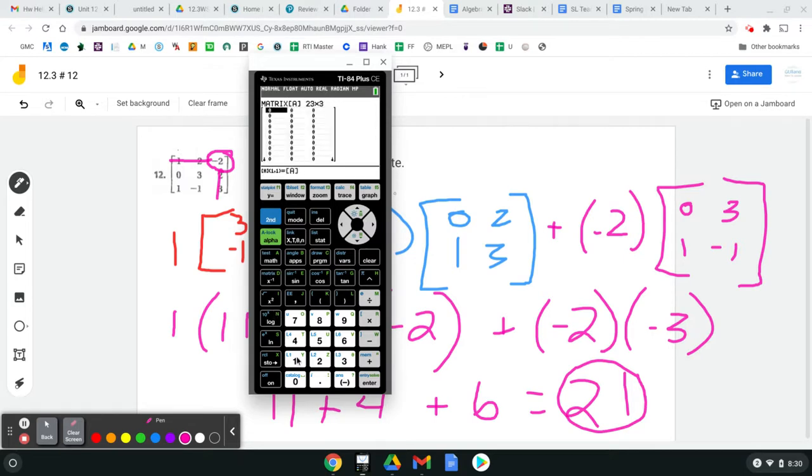that would take a long time. Edit one, we want it to be a three, hold on, let's go, quit, matrix, edit, one, three. Okay,